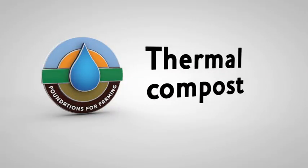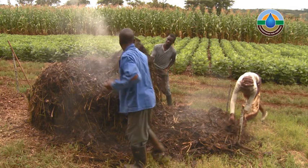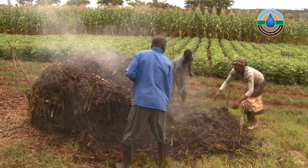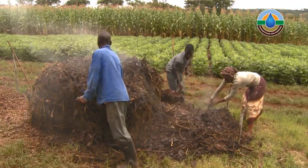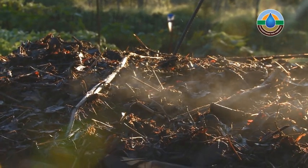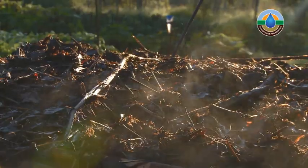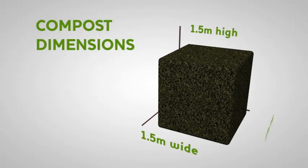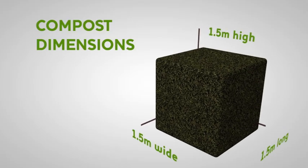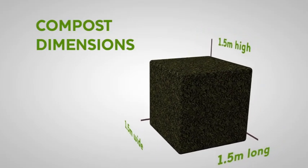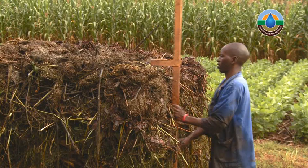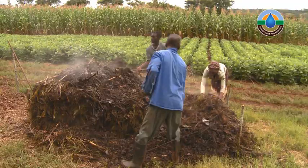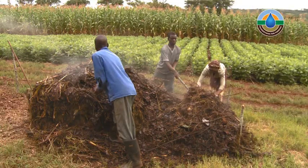The compost we will be making is thermal compost, which will get very hot. This heat is important as it will kill all weed seeds and pathogens. The smallest thermal compost heap should be about a 1.5 x 1.5 x 1.5 metre pile, which will ensure the compost gets hot in the centre, and is small enough for a few people to complete in a few hours.